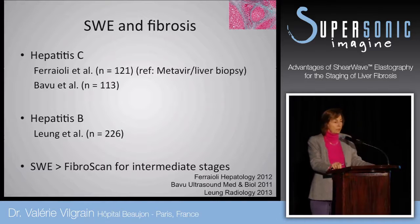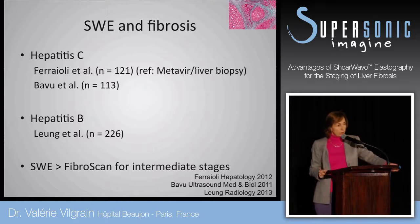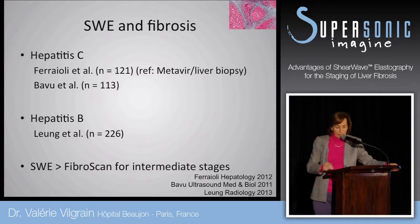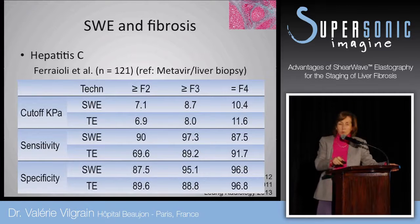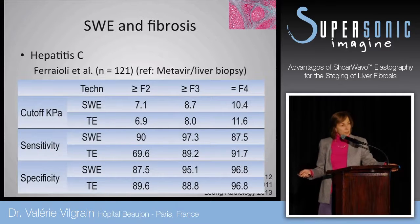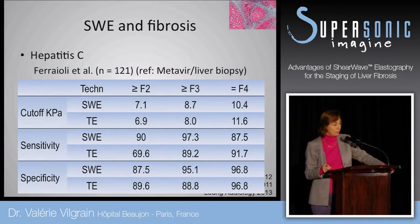We now have strong and reliable data regarding shear wave elastography in patients with hepatitis B and C, from studies including more than 100 or 200 patients. Studies comparing shear wave elastography with transient elastography show that sensitivity and specificity are much higher using shear wave elastography, especially in the setting of mild fibrosis, which is a key question.